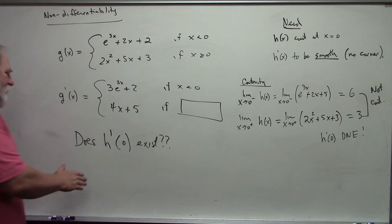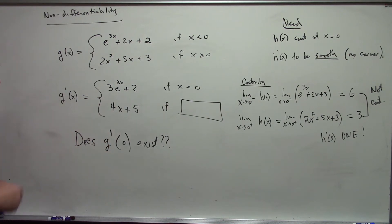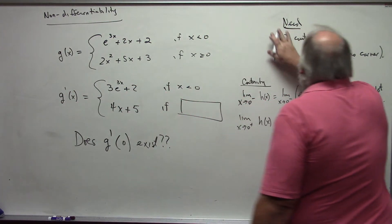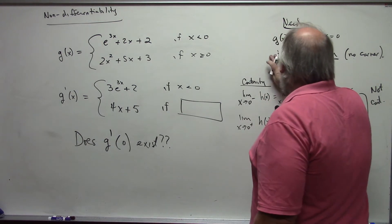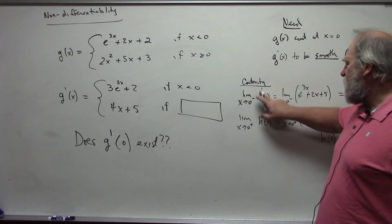And now the question is, does g prime at 0 exist? Again, we need g of x to be continuous at x equals 0 and g prime of x to be smooth.